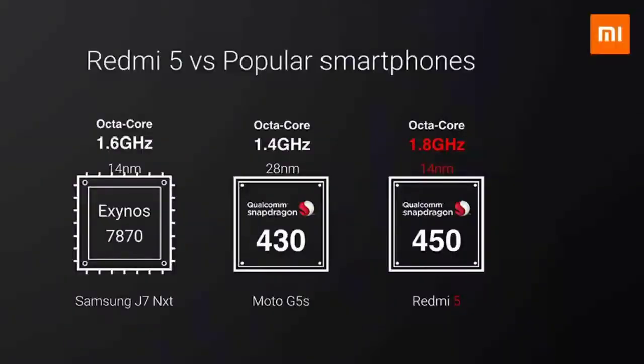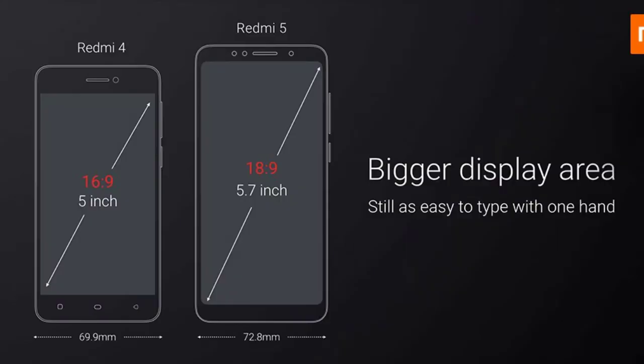First of all, we have the specifications of the processor and the performance of the laptop. The display is 5.7 inch and 14.40cm. The storage is 16GB. The battery is 3300mAh. The camera is dual MP and RAM is 2GB. The special features include the fingerprint sensor.